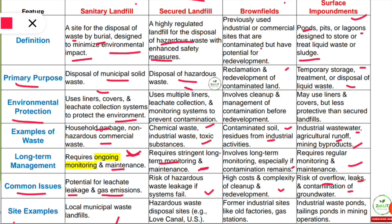Site examples: local municipal waste landfills are called sanitary landfills. Secured landfills include hazardous waste disposal sites — for example, Love Canal in the US, which was a very tragic disaster and is also a common exam question. Brownfield examples include former industrial sites like old factories and gas stations. Surface impoundment examples include industrial waste ponds and tailing ponds in mining operations.